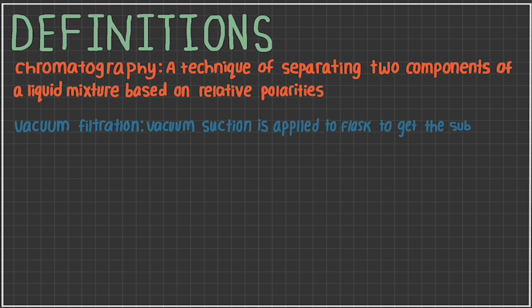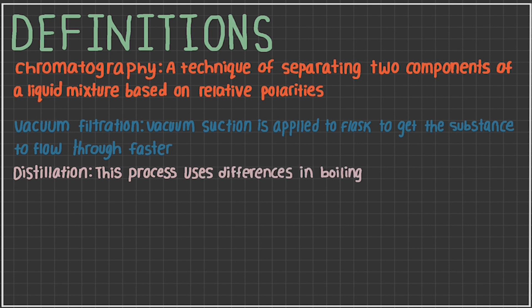a vacuum suction is applied to the flask to get the substance to flow through faster. And distillation, this process uses differences in the boiling points of components of a mixture to separate them.